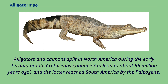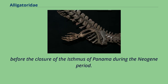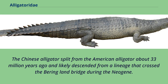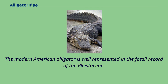Alligators and caimans split in North America during the early Tertiary, or late Cretaceous, and the latter reached South America by the Paleogene, before the closure of the Panama land bridge during the Neogene period. The Chinese alligator split from the American alligator about 33 million years ago and likely descended from a lineage that crossed the Bering Land Bridge during the Neogene. The modern American alligator is well represented in the fossil record of the Pleistocene.